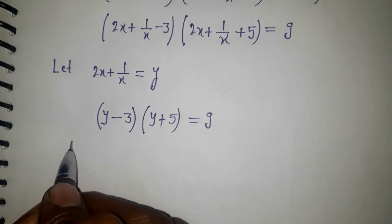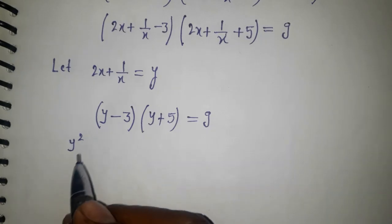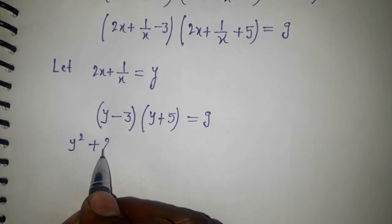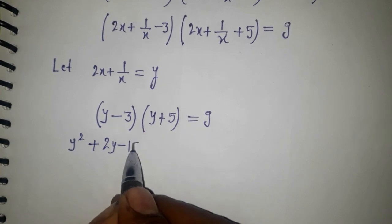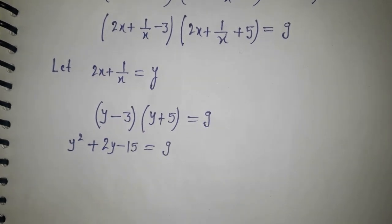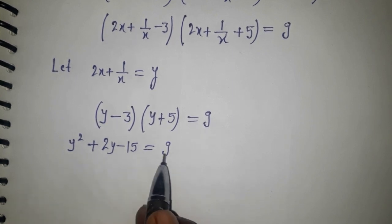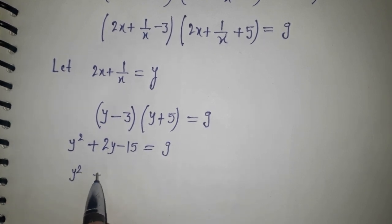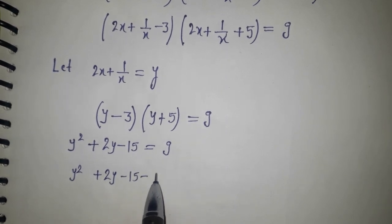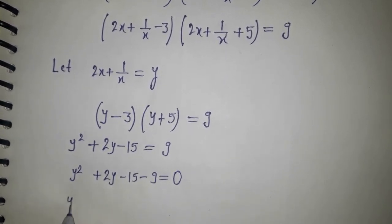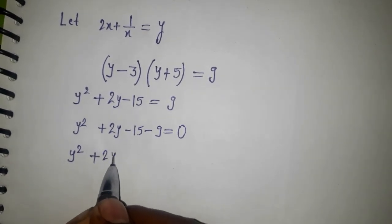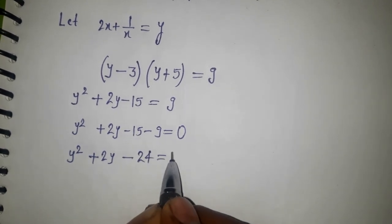Expanding (y - 3)(y + 5) gives y² + (5 - 3)y - 15 = 9, which is y² + 2y - 15 = 9. Bringing 9 to the left side gives y² + 2y - 15 - 9 = 0, so y² + 2y - 24 = 0.